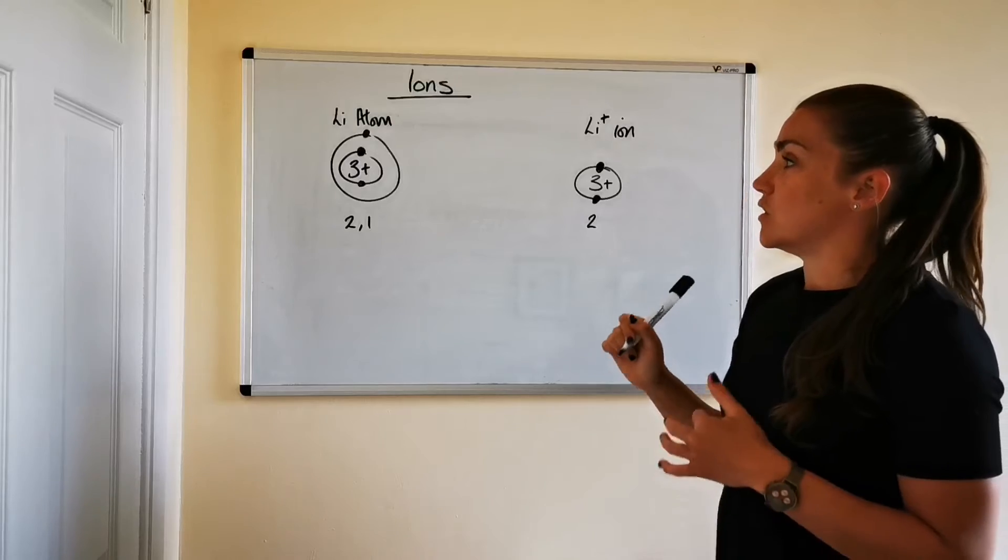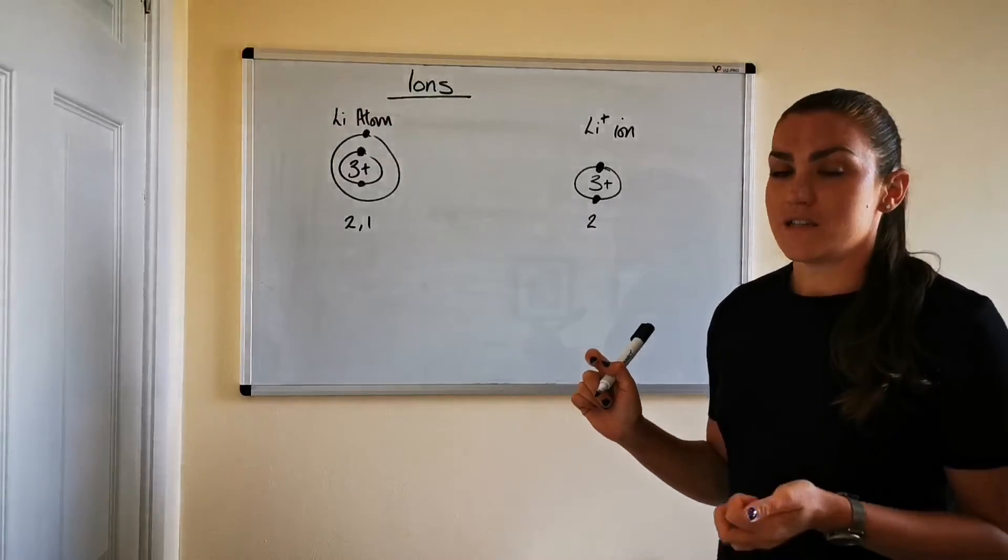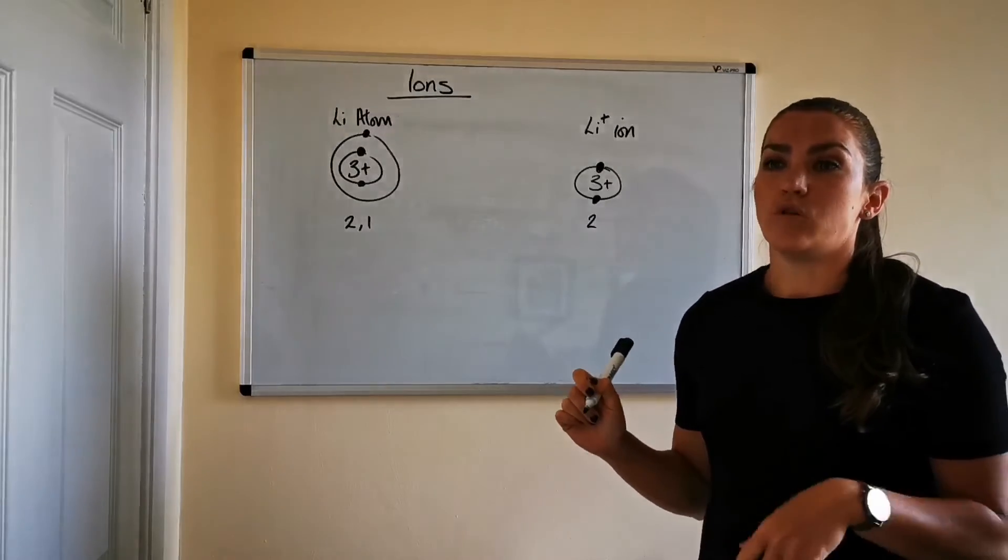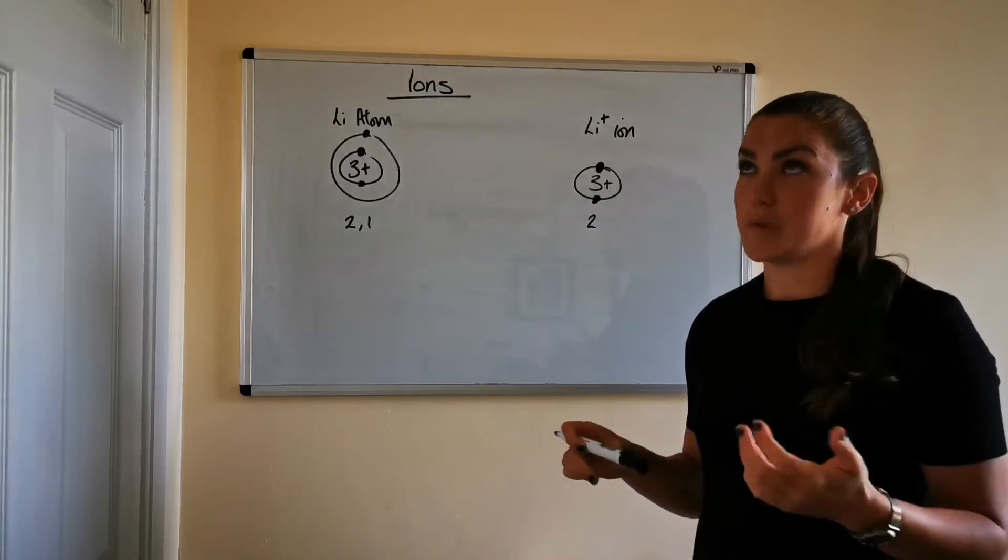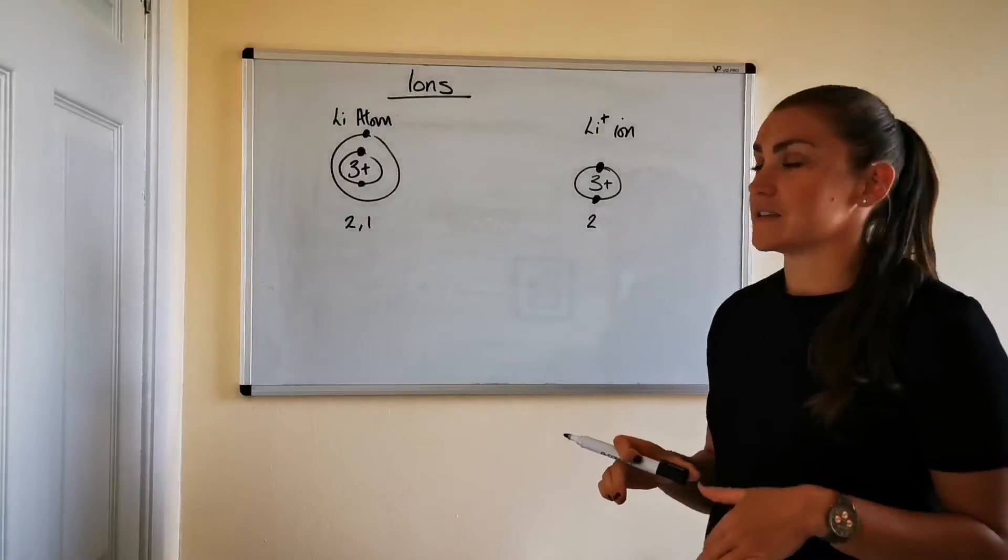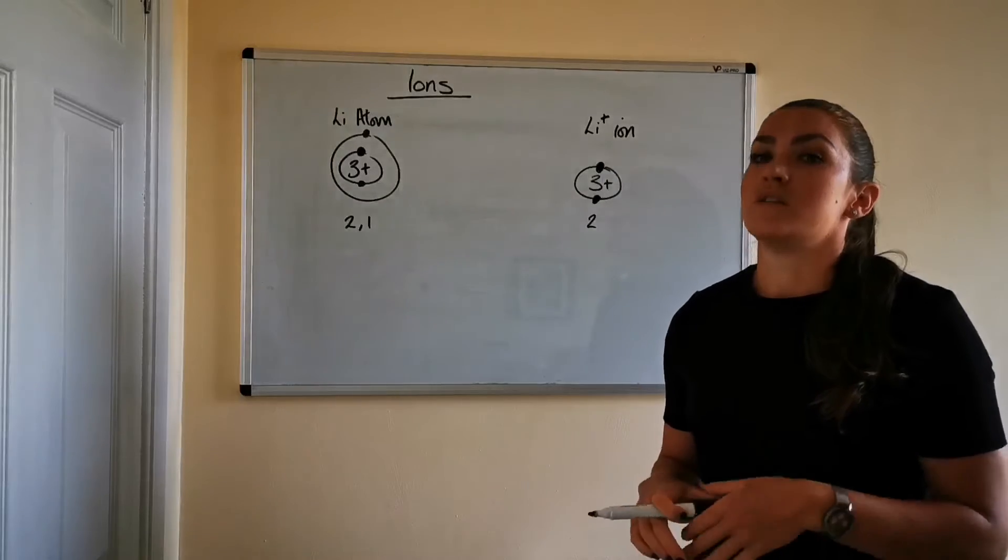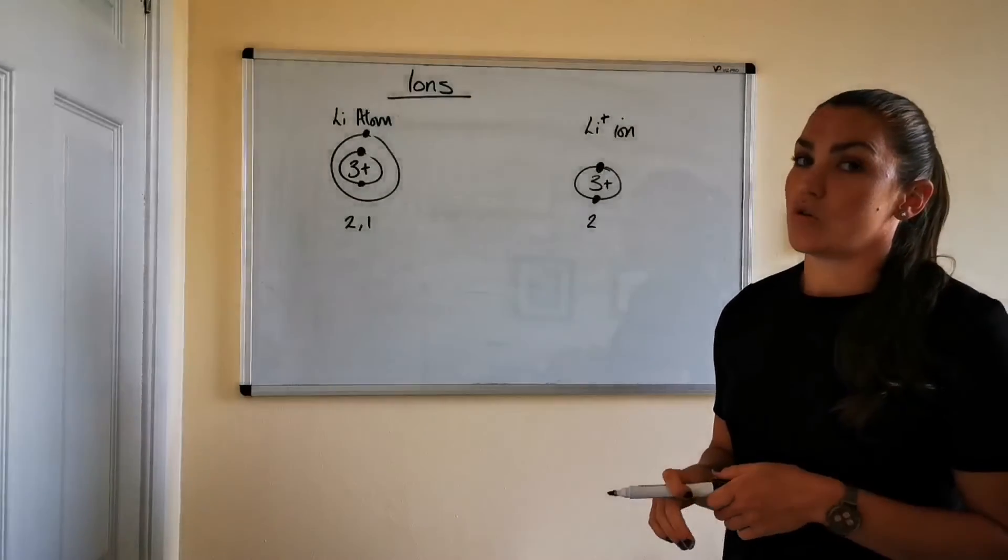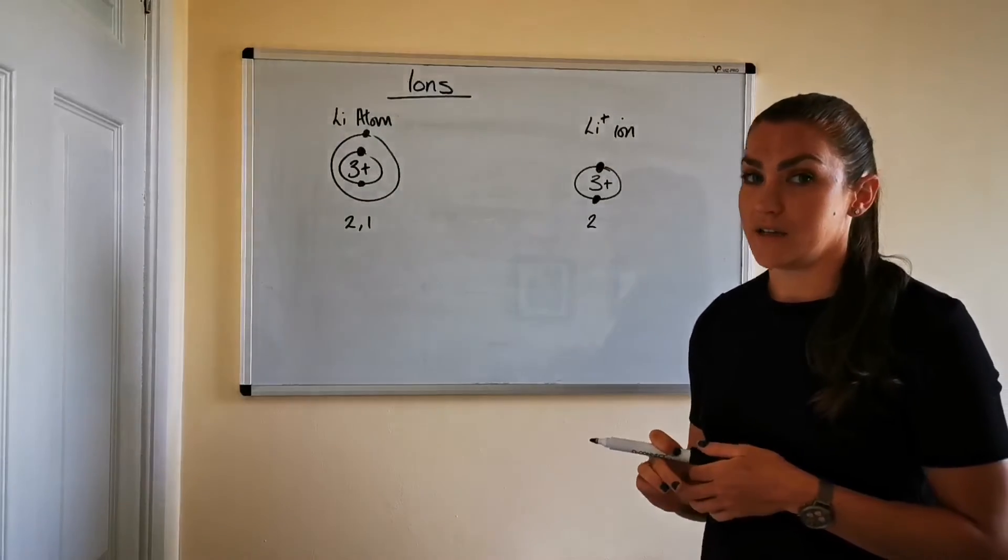Alright so all metal ions as a rule of thumb will become positive or will be positive. So any metal atoms that are becoming stable they will always be losing electrons so they will always end up as a positive ion.